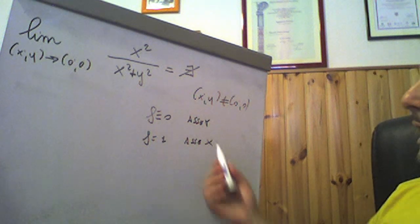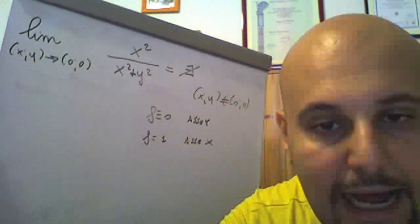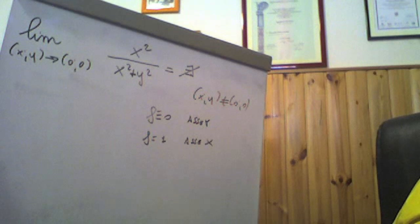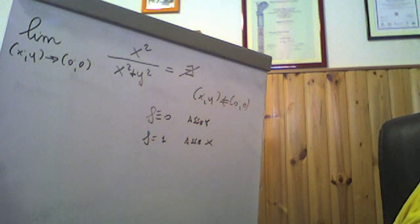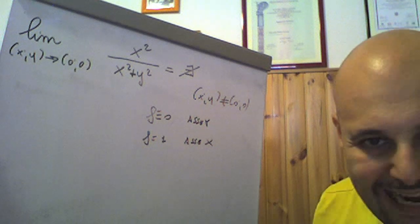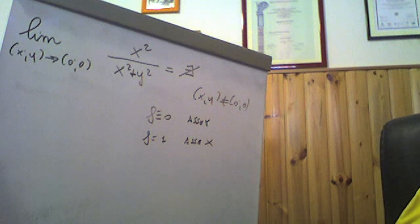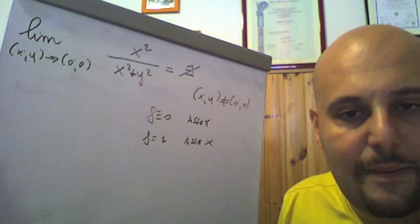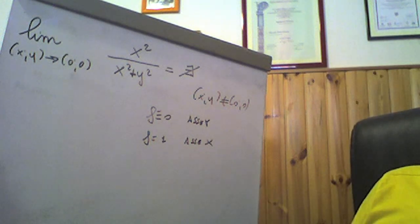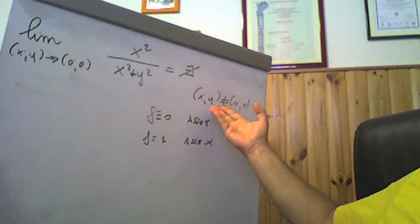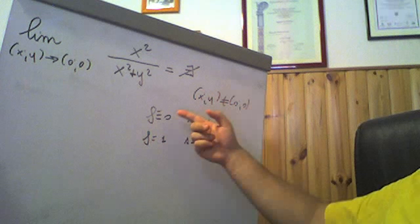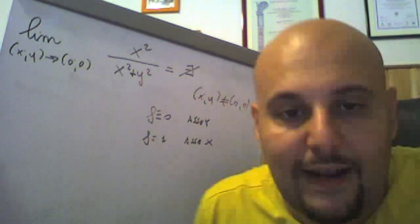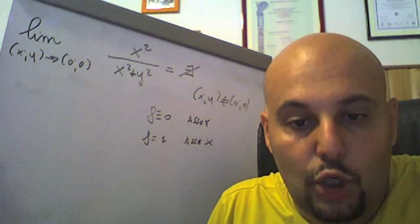Se andassimo ad applicare l'operazione illegale di far tendere prima x a 0 e poi y a 0, si avrebbe risultato 0. Se invece facciamo tendere prima y a 0 e poi x a 0, che è anch'essa un'operazione sbagliata, si avrebbe il valore 1. Più percorsi ci portano a valori diversi: esistono punti diversi dall'origine in cui in un caso f vale 0 e nell'altro f vale 1, rispettivamente sull'asse delle ordinate e sull'asse delle x. È provato che questo limite non esiste.